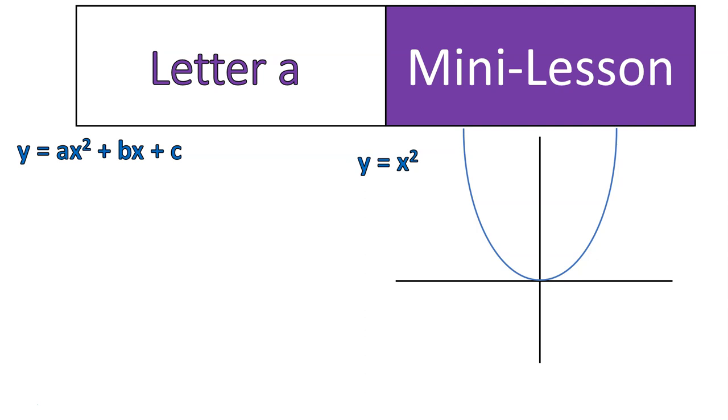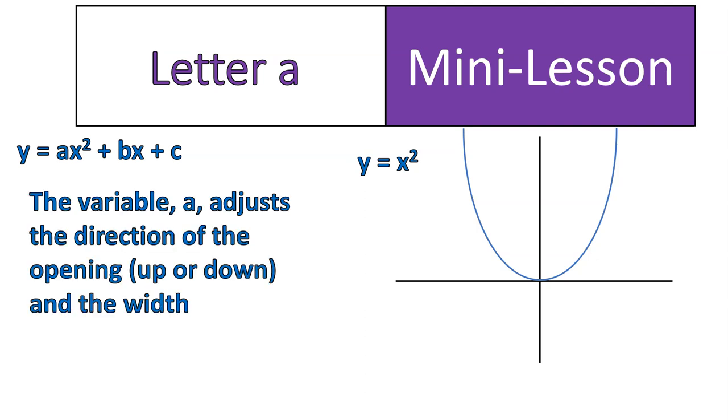So we're going to start with letter a. This one here will change the most number of things. When you change a, you adjust the direction of the parabola, either up or down. And you also adjust the width, whether it's wide or narrow. That's all determined by letter a.